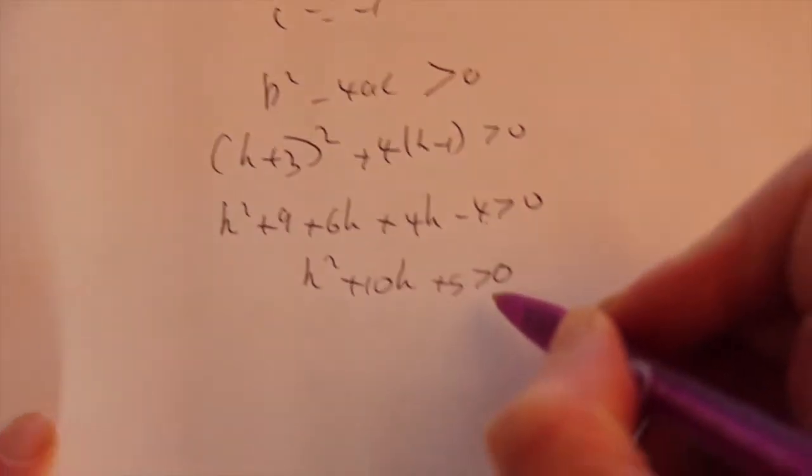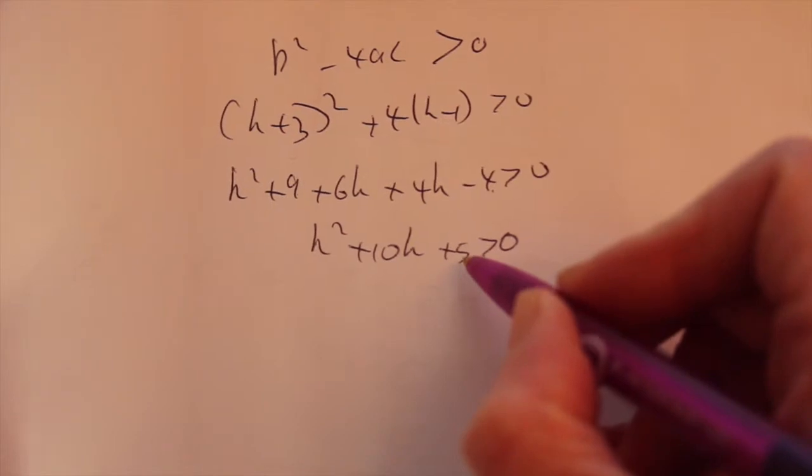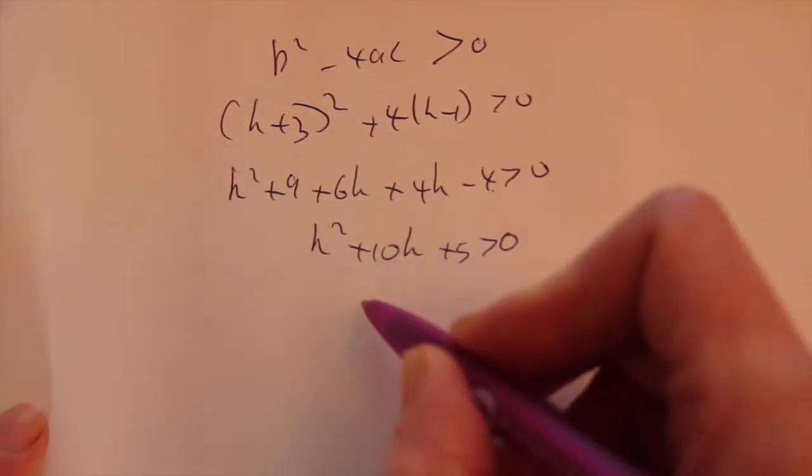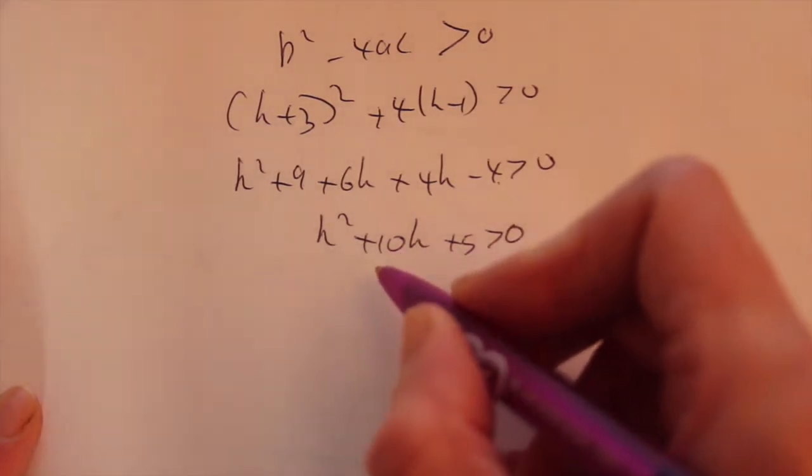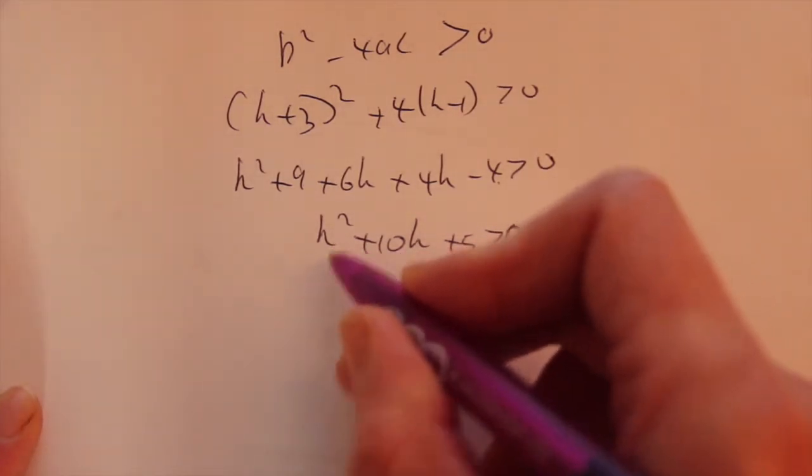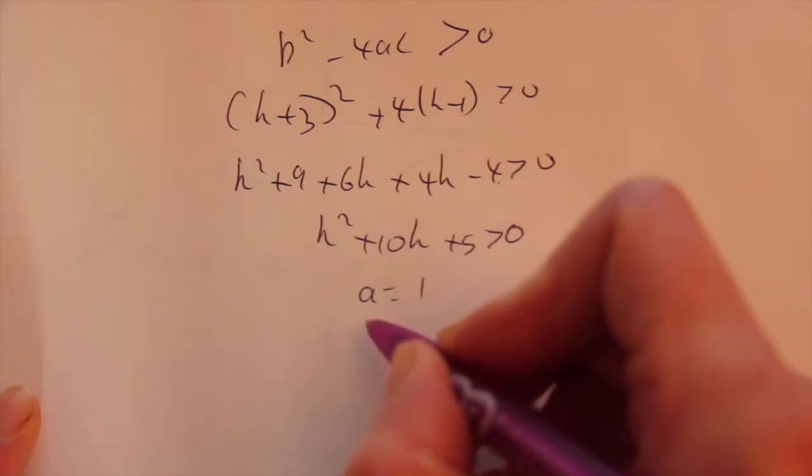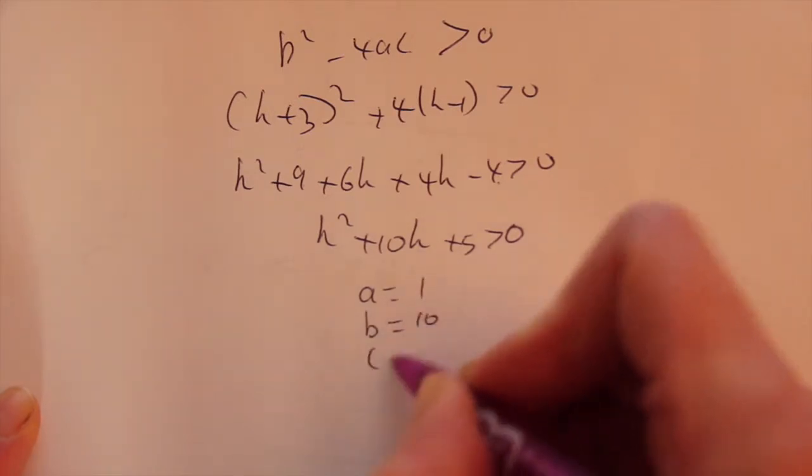See if you can factorize that. No numbers multiply to give 5 and add to give 10. So we'll use the quadratic formula to help us solve this. So first of all, we're going again. a is 1, b is 10, c is 5.